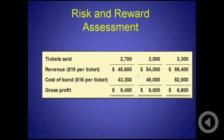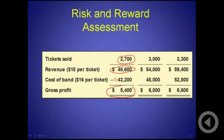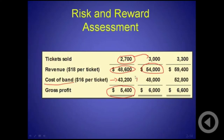If they sold 2,700 tickets at $18 revenue per ticket, and the band is paid $16 per ticket — so cost is 2,700 times $16 — the gross profit is $5,400. Now going from 2,700 to 3,000 tickets: 3,000 times $18 is $54,000 revenue, and the band cost goes up to 3,000 times $16, which is $48,000. Our profit is $6,000.